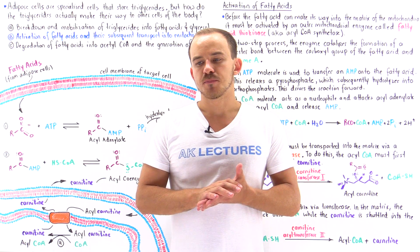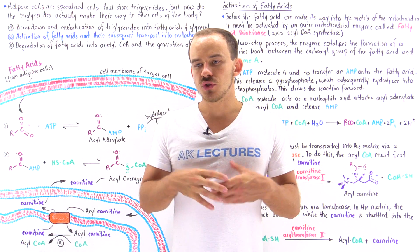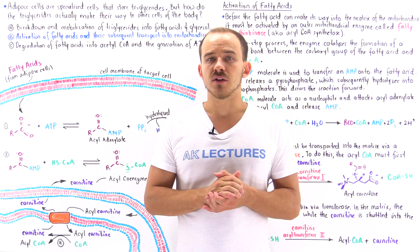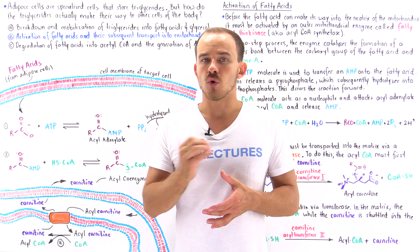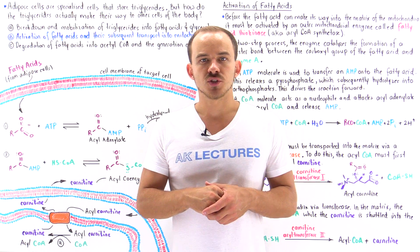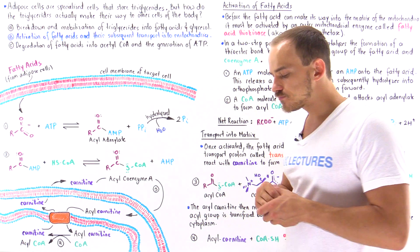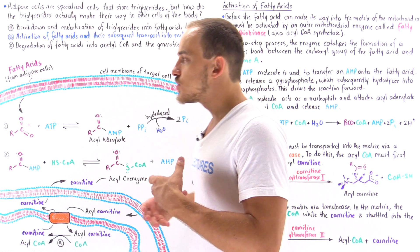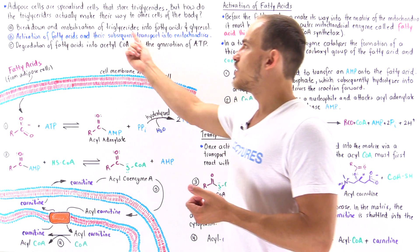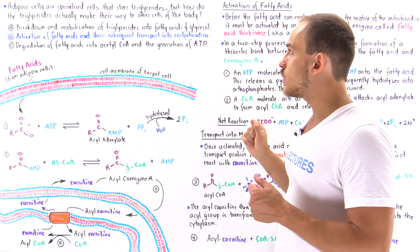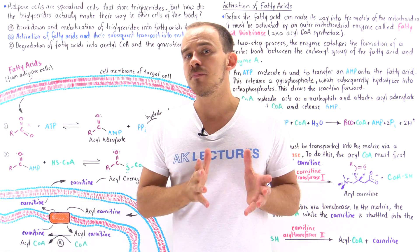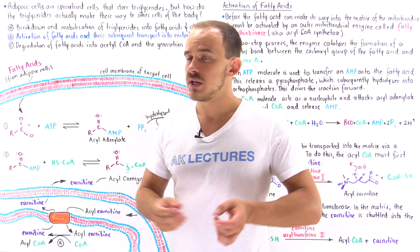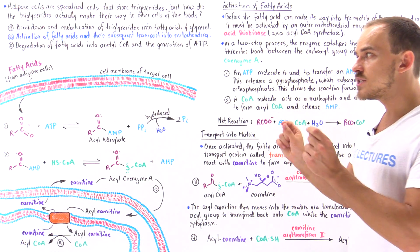We know that triglycerides are fuel molecules, but before the cells of our body can actually use the potential energy stored in the chemical bonds of triglyceride molecules, the triglyceride molecules have to undergo three important processes. In the previous lecture, we discussed stage one, where adipose cells release fatty acids — breaking down and mobilizing triglycerides into free-floating fatty acids and glycerol, then releasing the fatty acids into the blood plasma. A carrier protein known as serum albumin picks up these fatty acids and brings them to target cells.